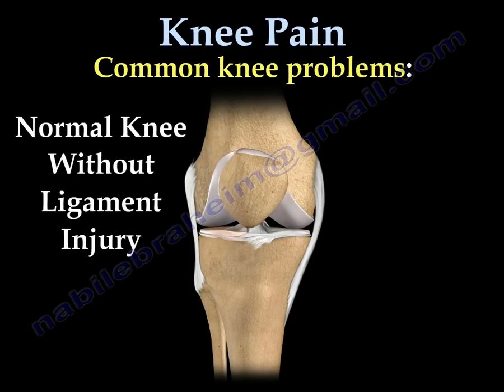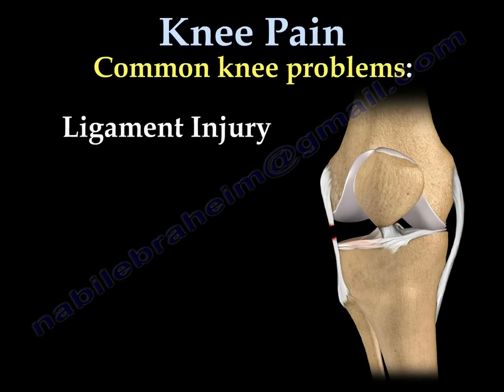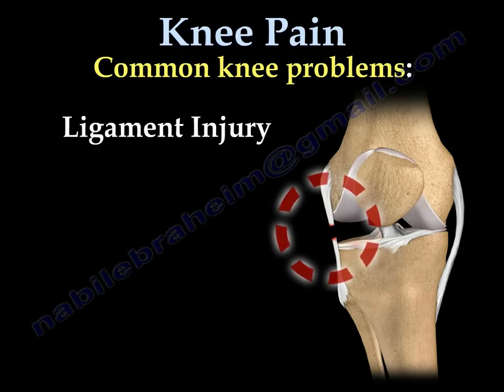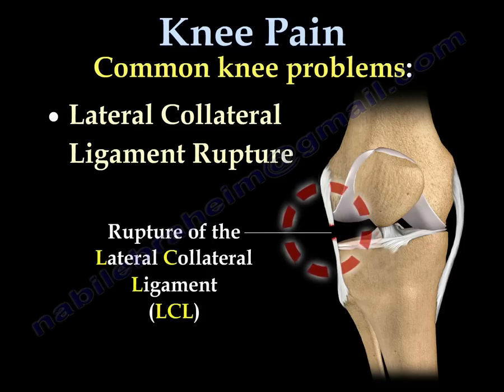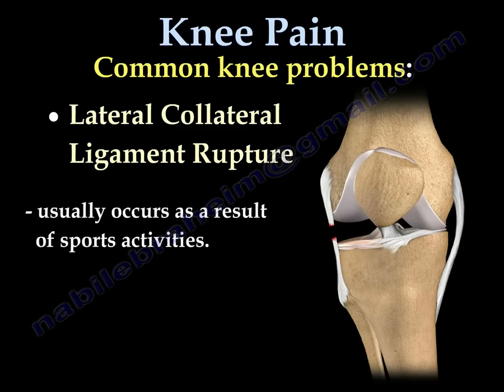This is a normal knee without ligament injury. You can see the medial and lateral collateral ligament and the ACL in the middle of the knee. This is an example of a knee injury — you can see the lateral collateral ligament injured. It usually occurs as a result of sports activities.